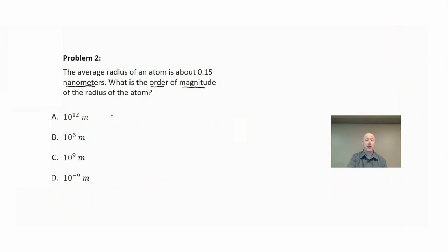But if we look at our answer choices, they all have meters. So what we need to do is convert nanometers to meters. And in this case, a nanometer is equal to 10 to the negative 9 meters, which means our correct answer is choice D.